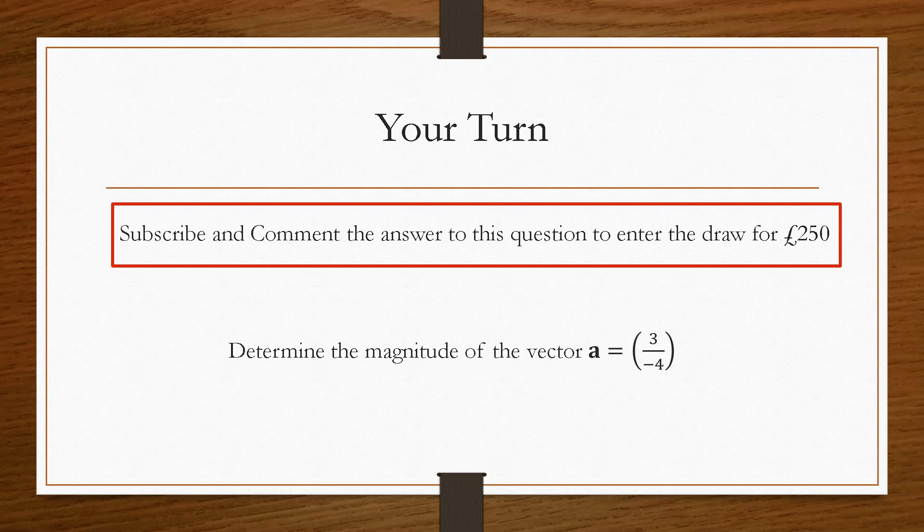So now it is your turn. In order to qualify for the £250 prize giveaway each month in 2021, all you have to do is subscribe to the channel and comment the correct answer to this question here. So all we want you to do is determine the magnitude of this vector a, so comment the answer, and only valid subscribers with the correct answer will be entered into the draw. The more videos that you comment on, the more entries that you will have at the end of each month.